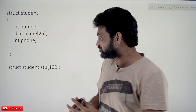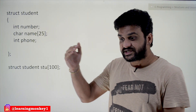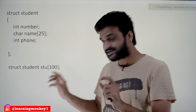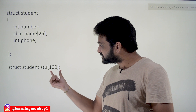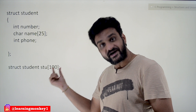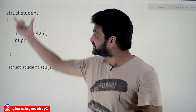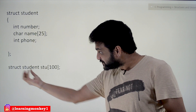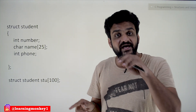This way of reading declarations is very important — it makes programming much easier. In this declaration, the square brackets have the highest precedence, so 'stu' is an array of 100 elements and each element is of type struct student. For comparison, if it were int stu[100], then stu is an array whose elements are integers.